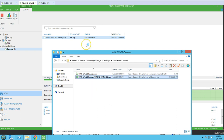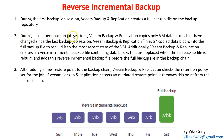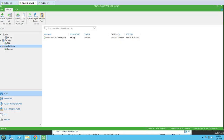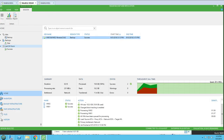During the first backup job, Veeam Backup and Replication creates a full backup file on the backup repository, which is now running and creating the full backup file on the E drive backup. During subsequent backup jobs, Veeam Backup and Replication copies only the VM data blocks that have changed since the last backup - it creates incremental backups. Veeam then injects the copy of changed data blocks into the full backup file to rebuild it to the most recent VM state. This backup has completed successfully.